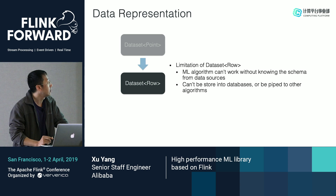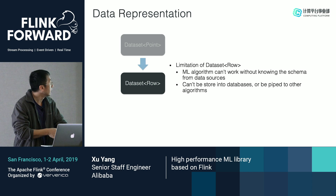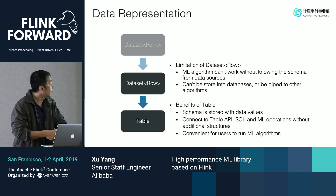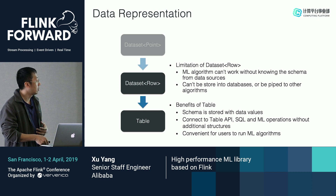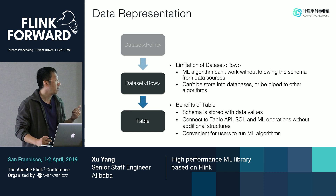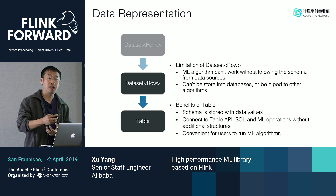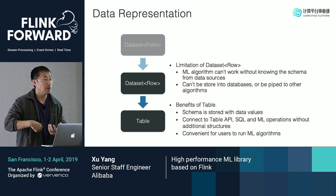For the dataset Row, there is also a limitation: in machine learning algorithms, we need the column name and column type, but this structure cannot give us that information. So we prefer to use a Table. A Table has a schema including the name and the type. Also, the Table API and SQL also support the Table. Taking the Table as the machine learning input and output, we can connect the ML algorithm with Table API operations and SQL operations, making it very easy for users to build a full pipeline.